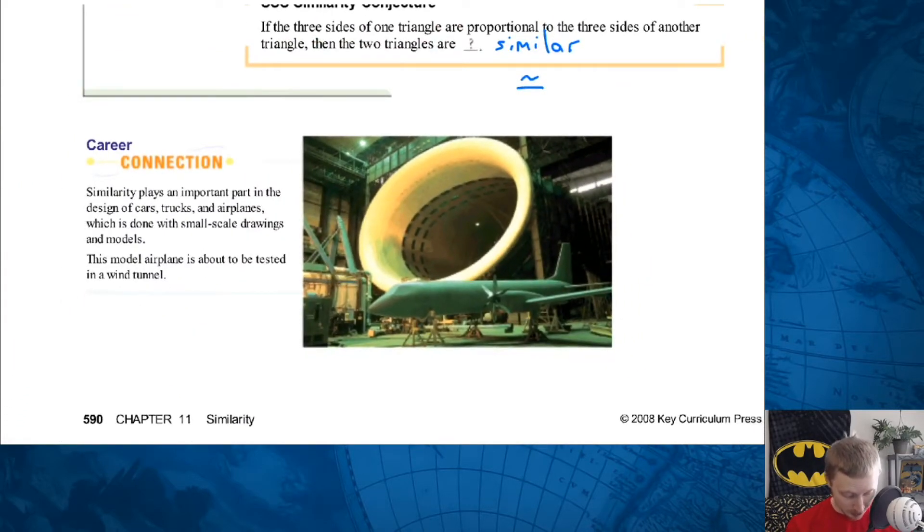So absolutely, side, side, side, totally works. If the three sides of one triangle are proportional to the three sides of another triangle, then the two triangles are similar, or we can use our symbol there. Similar, boom. What's this? Similarity plays an important role in the design of cars, trucks, airplanes, small-scale drawings. Hey, that's what I was talking about. Scale models, always try things small, and with cheaper materials before you go big and just like construct a giant bajillion dollar rocket, and then find out, oh shoot, it doesn't fit together. That would suck.